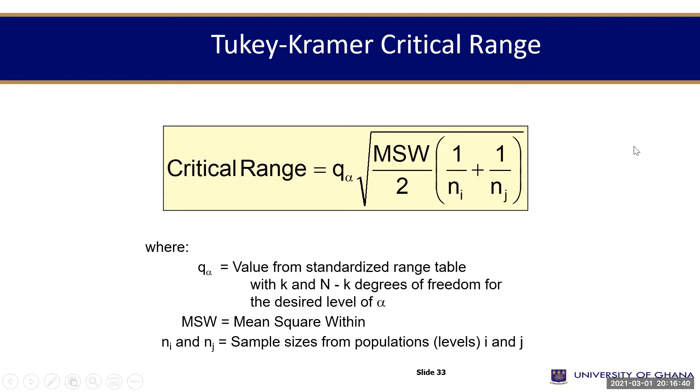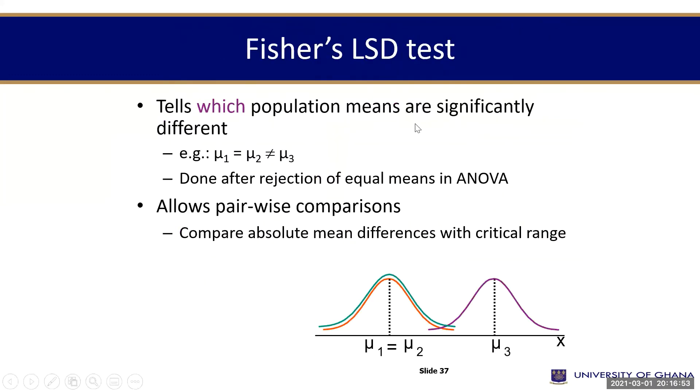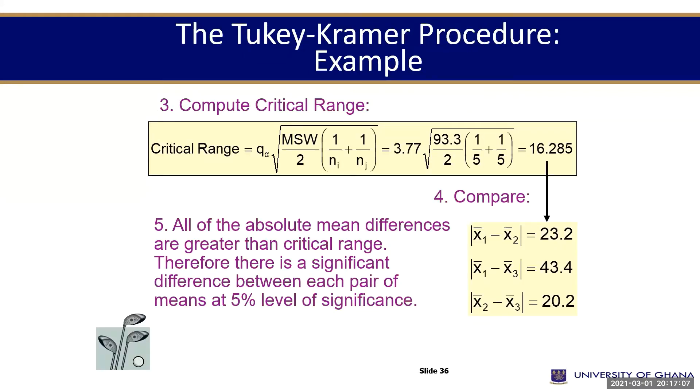And by pairwise comparison, we have two approaches or two methods that we can use. The first one is called the Tukey-Kramer critical range. Then the other one is the Fisher LSD. Fisher's LSD is the other one we can also use. Each one of them can help you to do the pairwise comparison. So I'm going to take you through each one of them in simple terms and they are also straightforward.